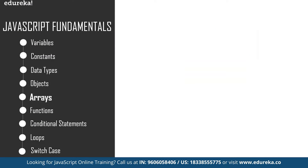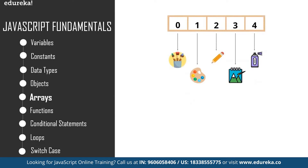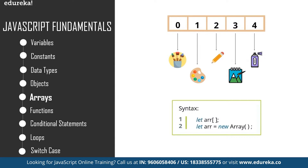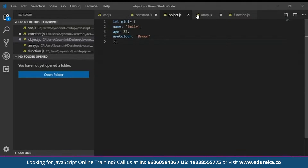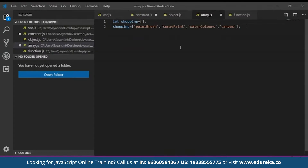An array is a data structure that contains a list of elements which store multiple values in a single variable. For example, if you went shopping to buy art supplies, the list of items you bought can be put into an array. To declare an array in JavaScript, use the let keyword with square brackets, and all array elements must be enclosed within them. You can define values inside the square brackets; when you don't insert any value it is an undefined array, and you can put any number of values inside.